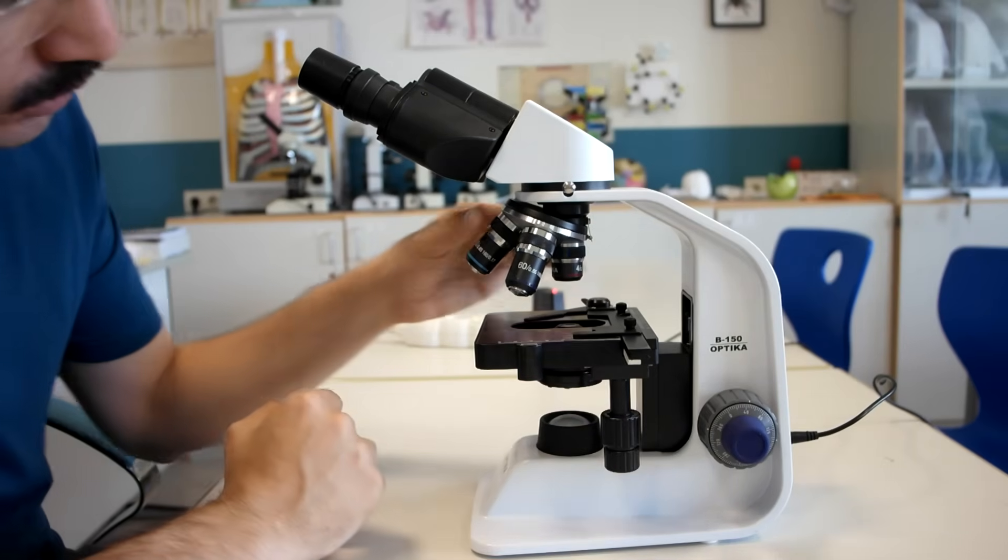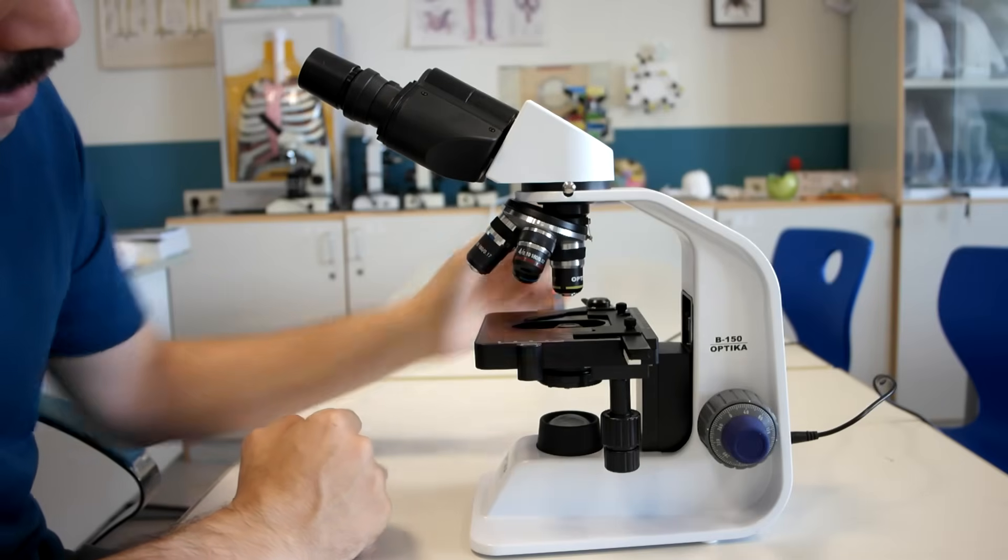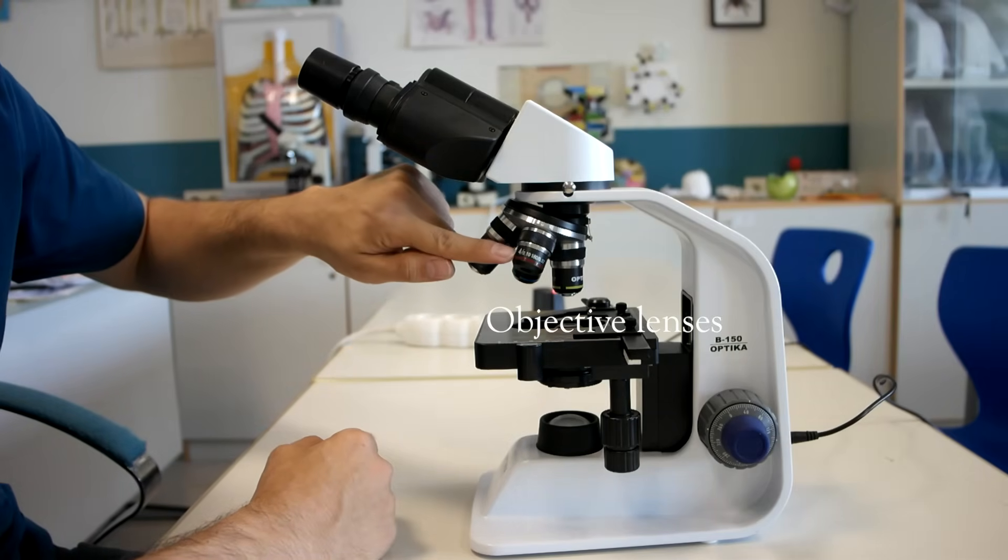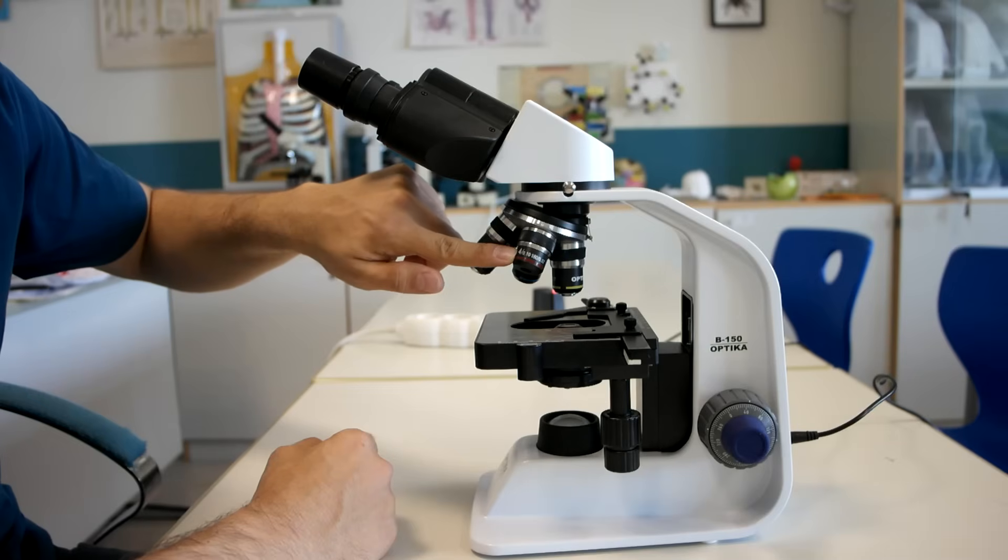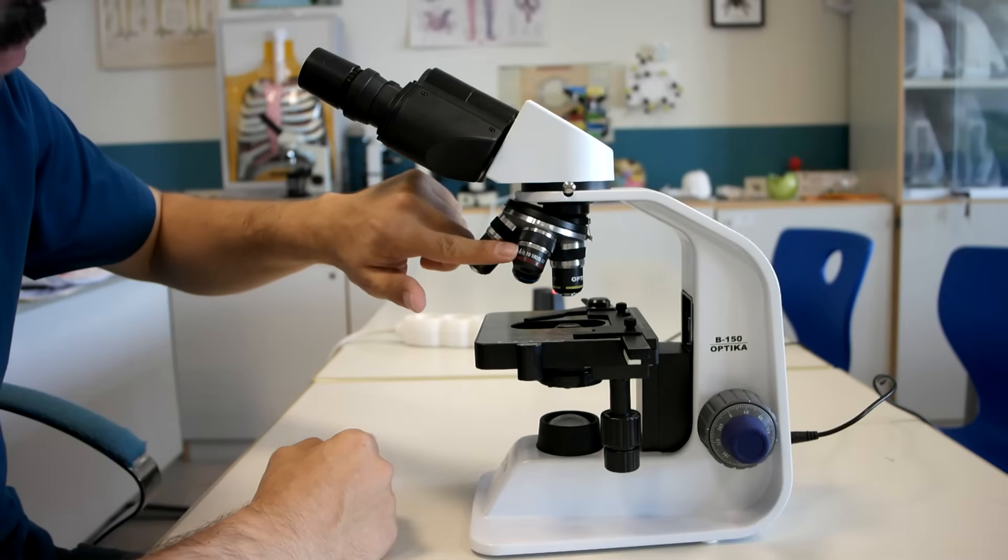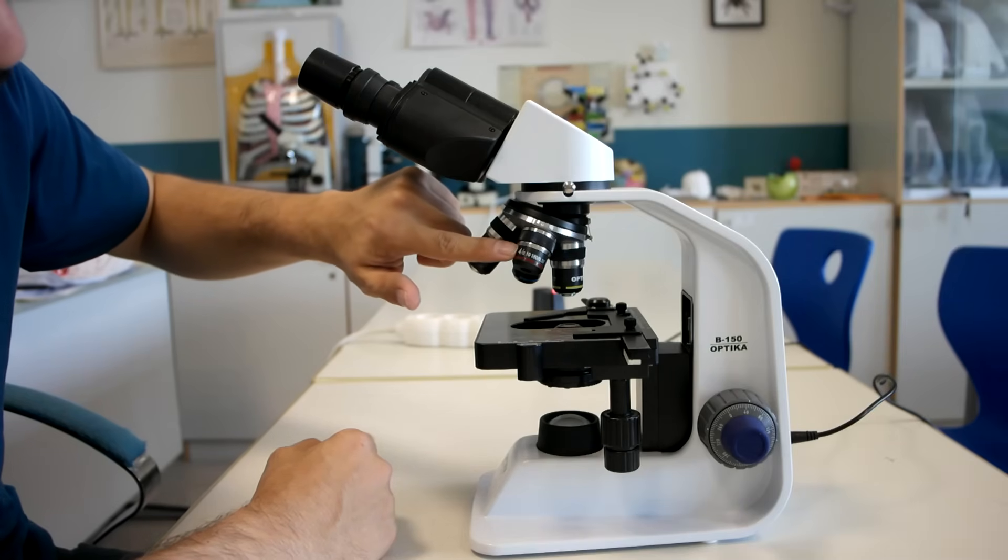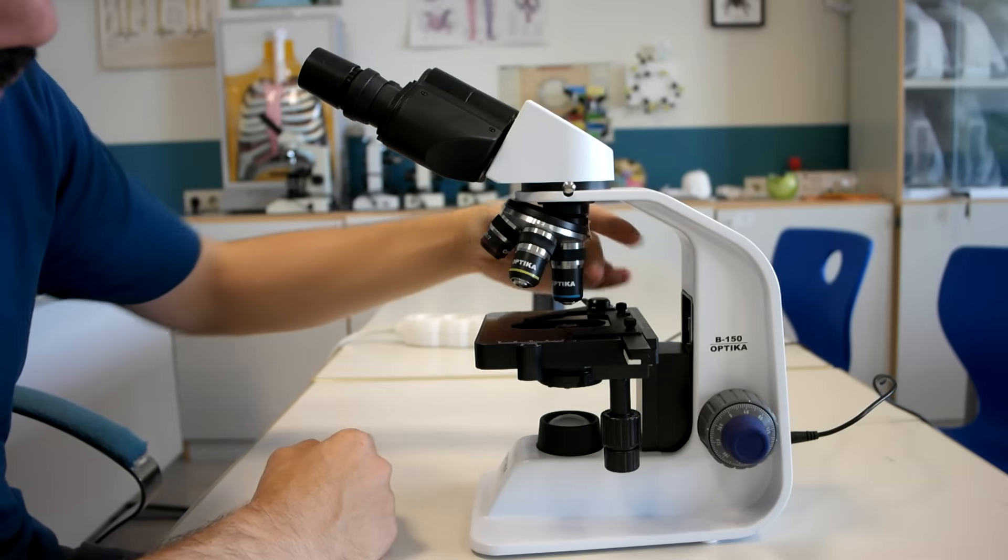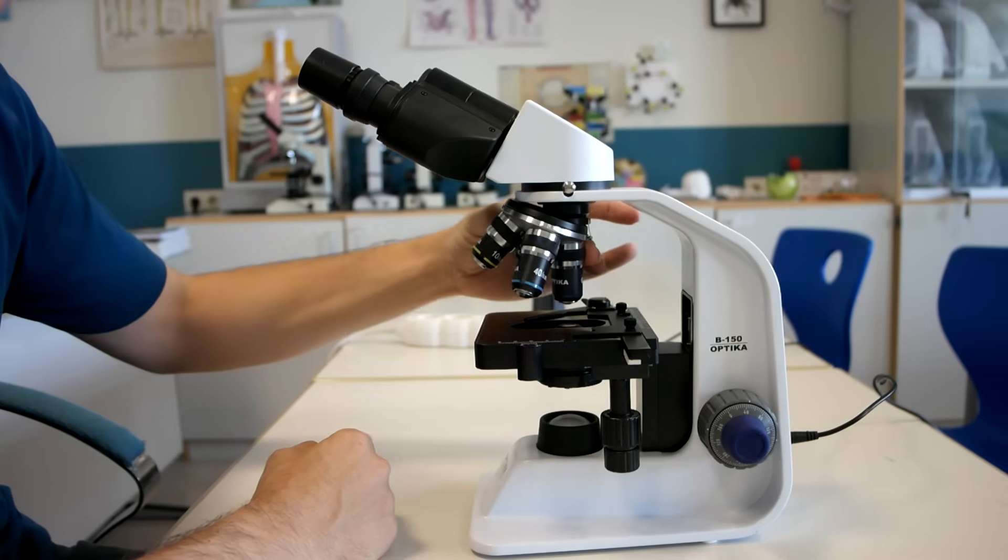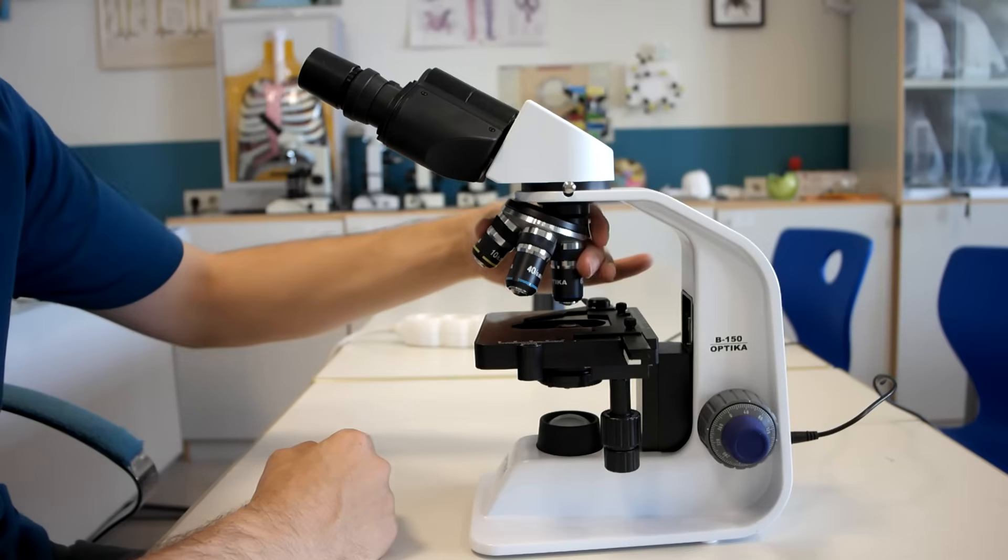This part is a nosepiece holding the objective lenses, and each objective lens has a color code, a different colored line or stripe showing the magnification power. This is 4, this is 10, this is 40 times objective lens.